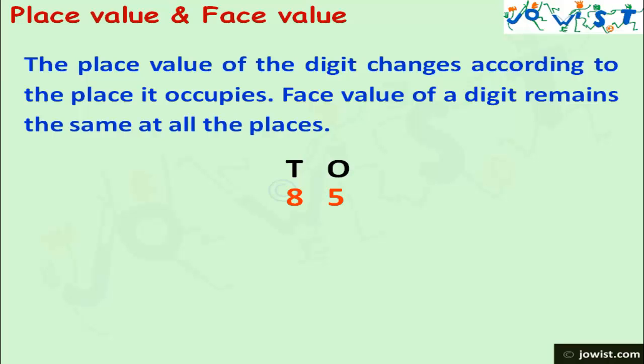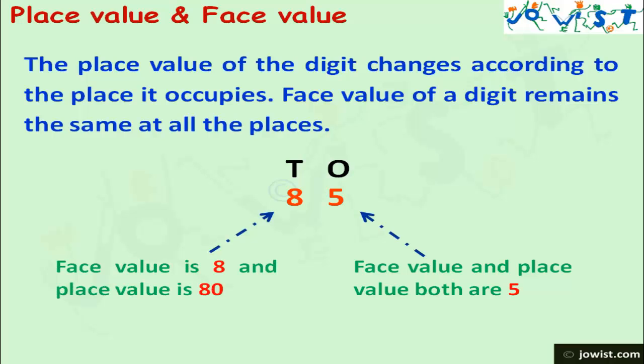In the number 85, the face value and place value of 5 are same. That is 5. But the face value of 8 is 8 and the place value is 80. There are 8 tens and 5 ones in the number 85.